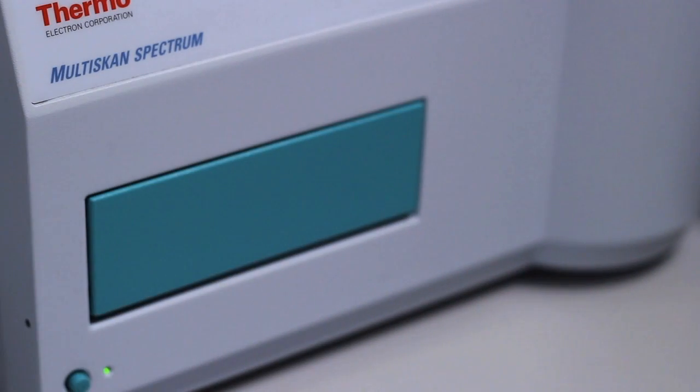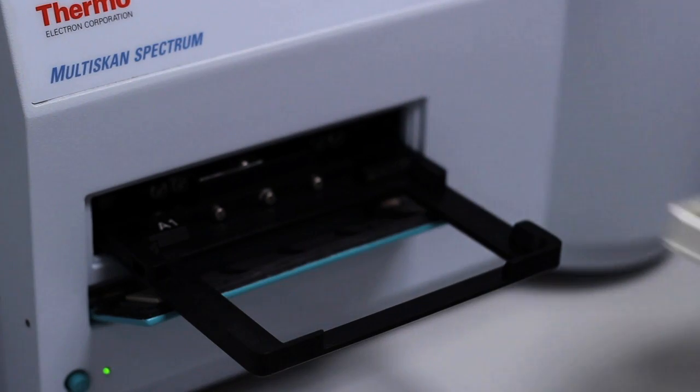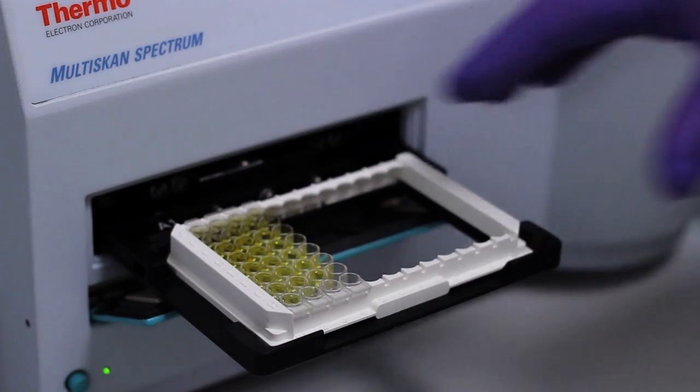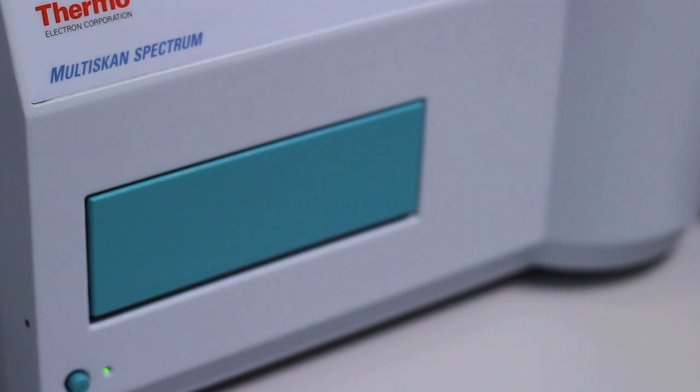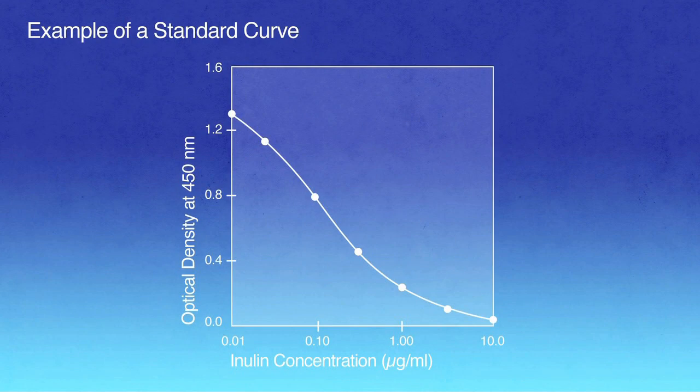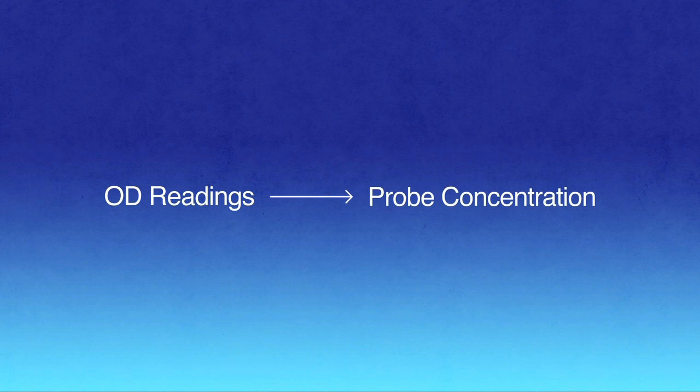Using a plate reader, we will now read the plate. Your equipment should be set to read 450 nanometers. Most software packages will have a four-parameter curve fit option available, which should be used to fit the sigmoidal shaped curve. Moreover, most packages will also automatically convert the OD readings of each sample to its corresponding probe concentration, based upon the limits of the curve fit.